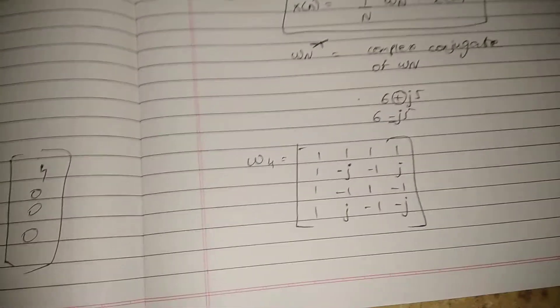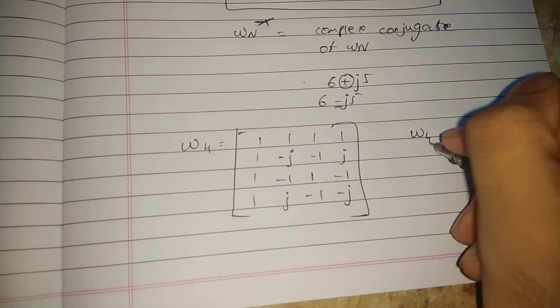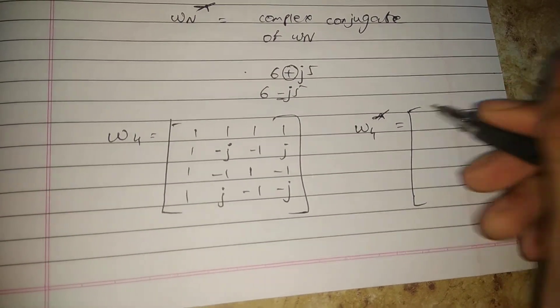This is the twiddle factor matrix for omega 4. Now, what is omega 4 star that we use in IDFT? I'll draw the IDFT matrix here.